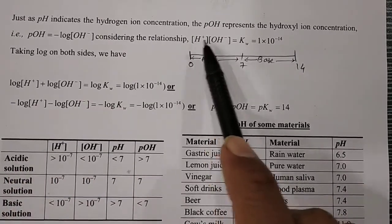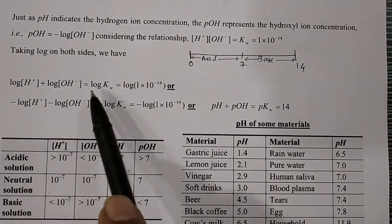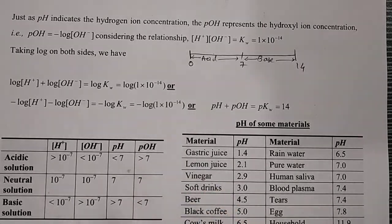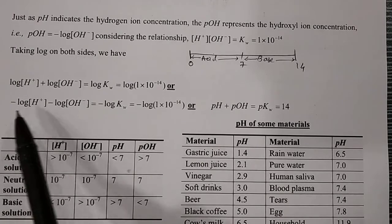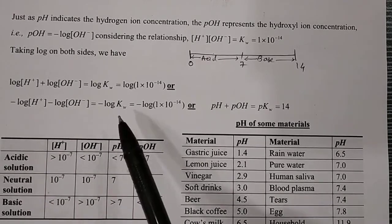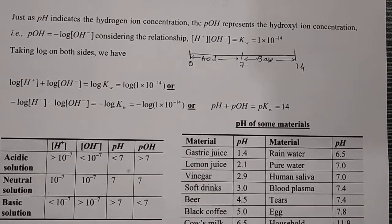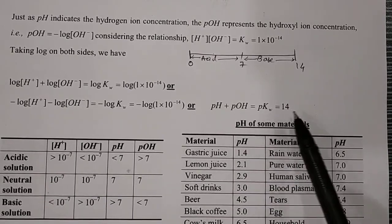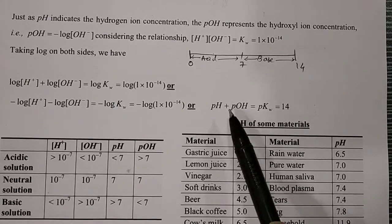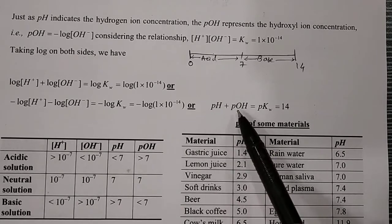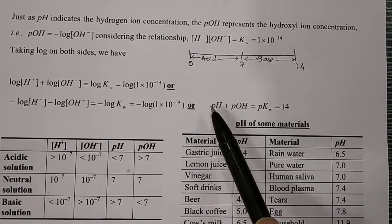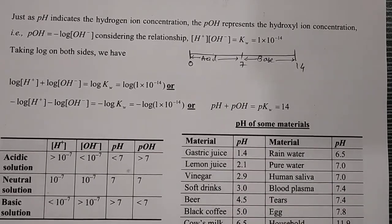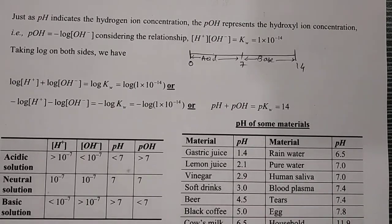Taking the log on both sides: log[H+] + log[OH−] = log Kw = log(1×10⁻¹⁴). Multiplying both sides by −1: −log[H+] − log[OH−] = −log Kw = −log(1×10⁻¹⁴). This gives the new equation: pH + pOH = pKw = 14. Always remember this — you can use it in numerical problems. If you know either pH or pOH, you can find the other.